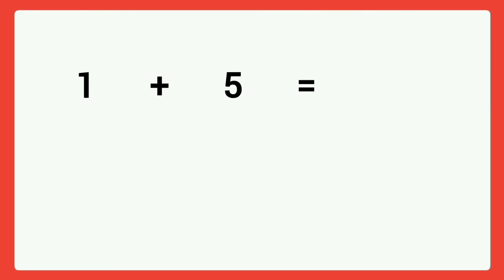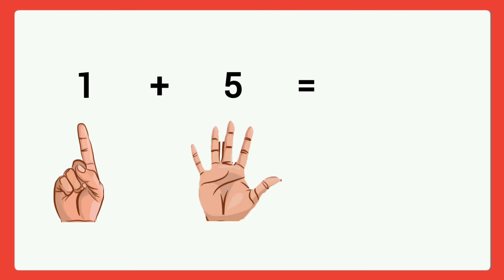Then next, one plus five. Take one finger in your right hand plus five fingers in your left hand. Then count all together. How many fingers are here? One, two, three, four, five, six. Six fingers. One plus five equal to six.